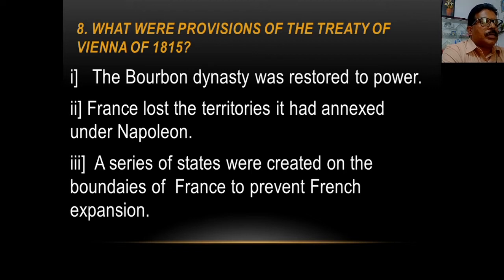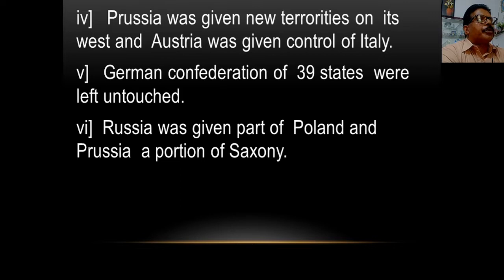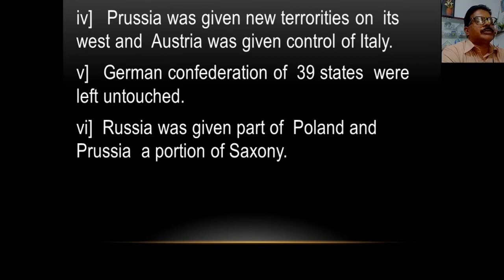Point number three: a series of states were created on the boundaries of France to prevent French expansion into Europe. Point number four: Prussia was given new territories on its western side and Austria was given control of Italy. Prussia, the most important state of Germany, was given new territories on its west.